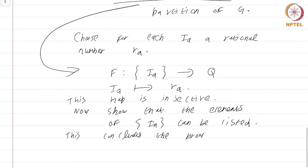So, every open set in R has quite a simple structure: it is either the empty set or it is a countable disjoint union of open intervals, where many of those open intervals could possibly be of infinite length, meaning the endpoints are allowed to be −∞ or +∞. This is a course on real analysis and you have just watched the module on the structure of open sets.